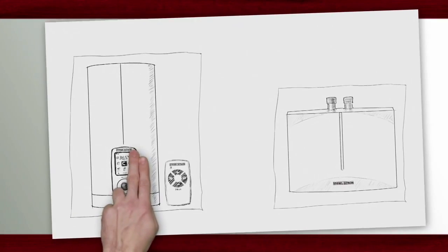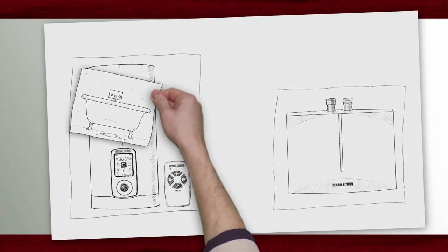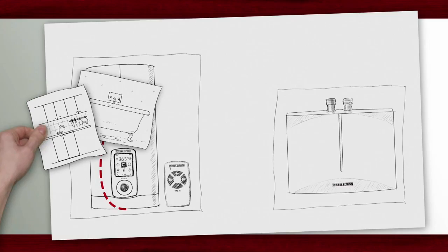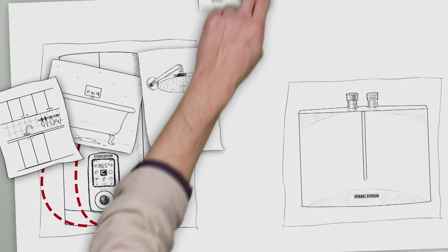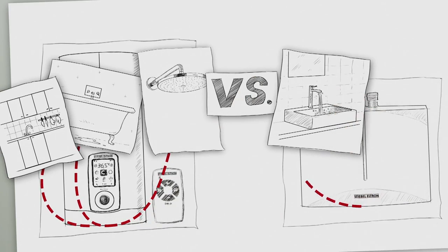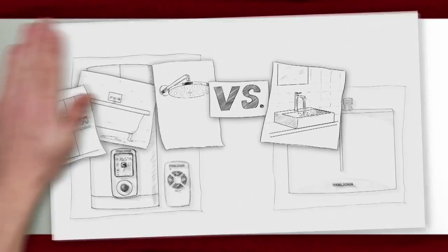For an installation with several draw-off points, we need an appliance suitable for mains pressure. Non-pressurized water heaters, on the other hand, are suitable for a single draw-off point. It's important to select the right kind of tap for the two different systems.